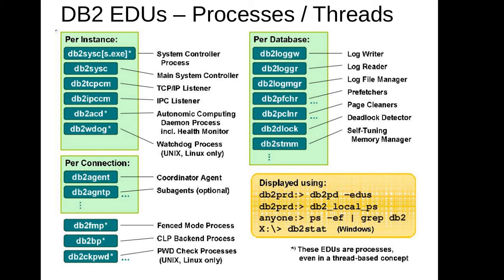We know that DB2 architecture consists of a DB2 instance, and under the instance we have a database. As far as DB2 is concerned, we can have multiple databases under the same instance. There are processes which are specific to the instance and processes which are specific to the database.